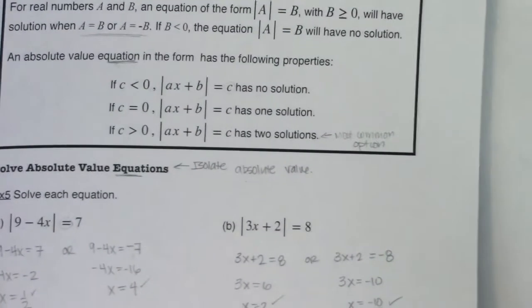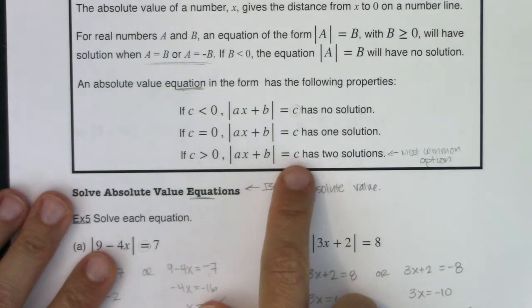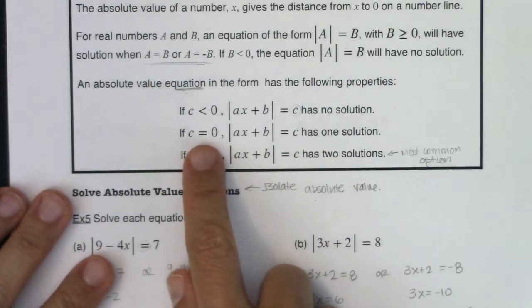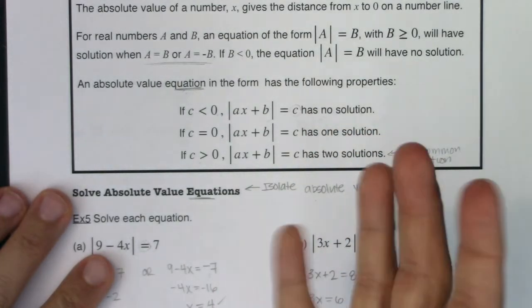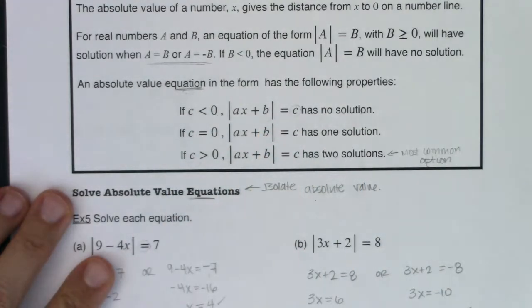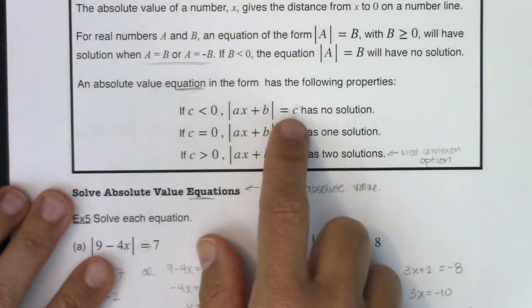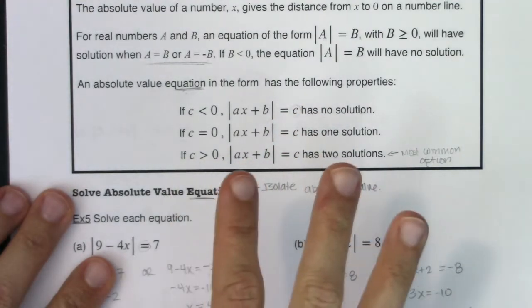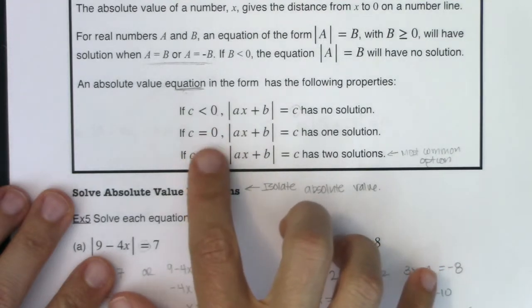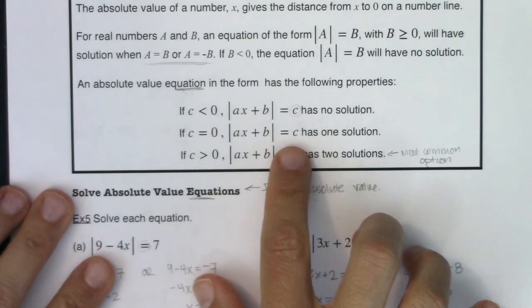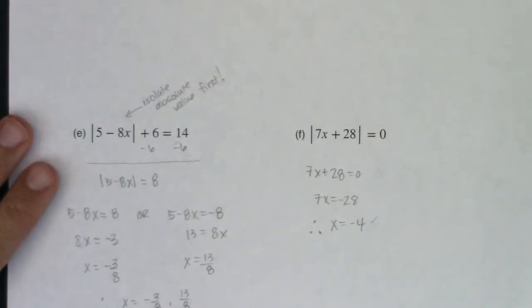Checking: 7 times negative 4 is negative 28, and negative 28 plus 28 is zero — the absolute value of zero is zero. So there's exactly one solution. Referring back to the three cases: the most common is a positive number on the right giving two solutions; we saw zero on the right in 5f giving one solution; and a negative number on the right in 5d giving no solution. All three options were demonstrated.